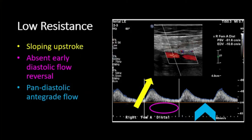In comparison, a low resistance waveform shows a sloping upstroke and pandiastolic flow without the early diastolic flow reversal. These qualities of the duplex tracing are directly correlated to low resistance of the tissue bed downstream.